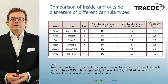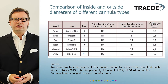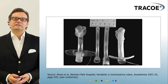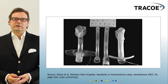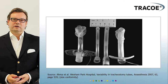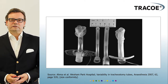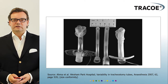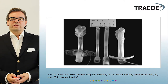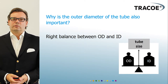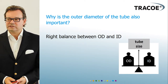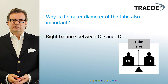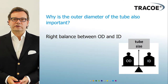Two tubes used in a hospital in England were evaluated for inner cannula size, and the difference was clearly visible — one cannula was much smaller than the other. This is what you are offering your patient when you don't have the right size. The key when talking about tracheostomy tubes is always to find the right balance between outer diameter and inner diameter to make breathing as easy as possible for the patient.